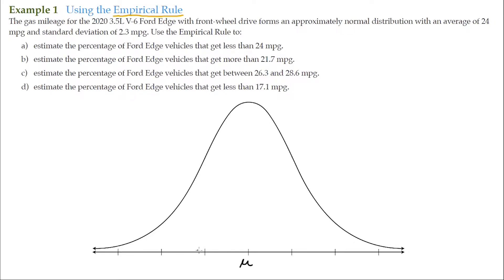Don't forget that this is a number line. As the number line increases, we add a standard deviation for each interval. Here's sigma — sigma represents the standard deviation of a population. We keep adding a standard deviation as we go up the number line, and consequently, as we go down, we subtract the standard deviation.